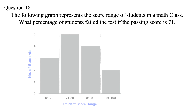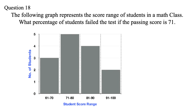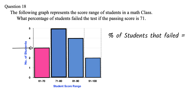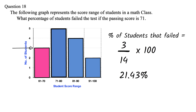Question 18: Using the same graph, what percentage of students failed the test if the passing score is 71? From the graph, 3 students scored 61 to 70, and all other students scored 71 or above. The percentage of students that failed is the number who failed — which is 3 — over the total number of students — which is 14 — multiplied by 100. Computing this gives 21.43% failed.